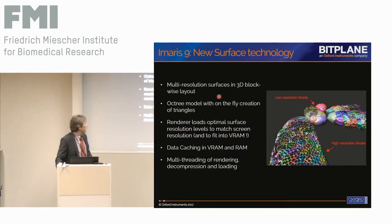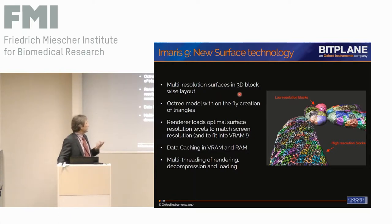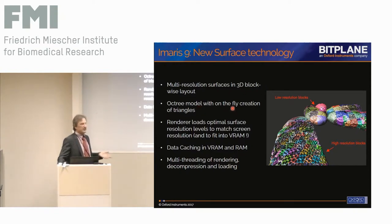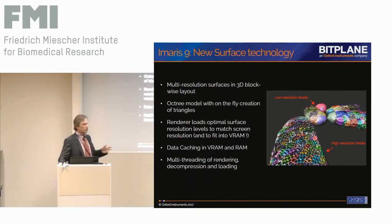So how does this work? As I said, we use multiple resolution surfaces now for the 3D block layout — you see these colors like we saw for the volume visualization, now applied to surfaces as well. We use the Octree model to create the segmentation. On the fly, we then create the triangles. The segmentation output is not really triangles but this Octree model, which speeds up things a lot when you want to visualize it. GPUs are nowadays fast enough to create the triangles on the fly.